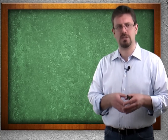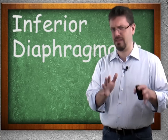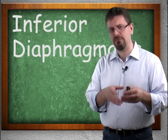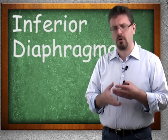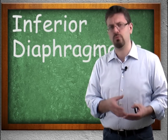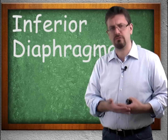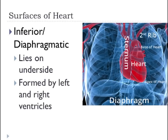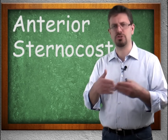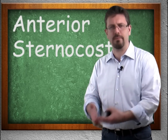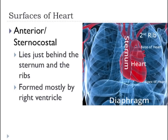There are three surfaces of the heart. The inferior or diaphragmatic surface lies towards the bottom next to the diaphragm, and is formed by the left and right ventricles. The anterior or sternocostal surface is at the front, just behind the sternum and the ribs, and is formed mostly by the right ventricle.